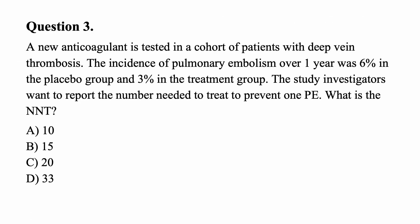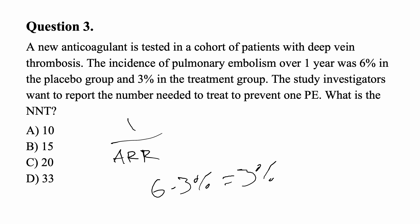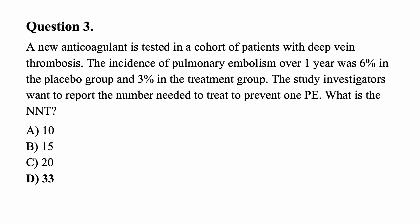Question three: A new anticoagulant is tested in patients with DVT. The incidence of PE over one year was 6% in the placebo group and 3% in the treatment group. What is the number needed to treat to prevent one pulmonary embolus? NNT equals 1 over the absolute risk reduction. Absolute risk reduction is 6% minus 3% equals 3%. So NNT equals 1 divided by 0.03, which is approximately 33. The answer is D.